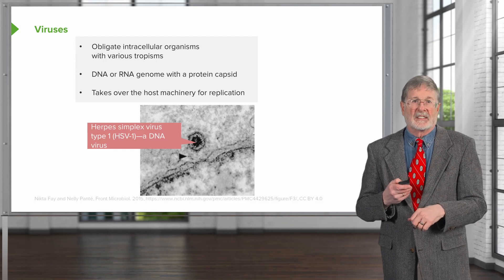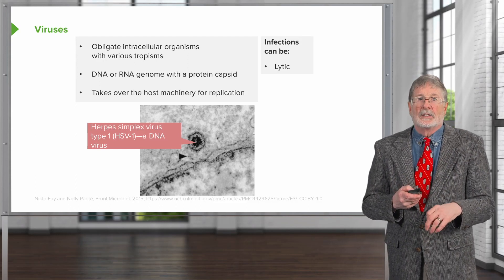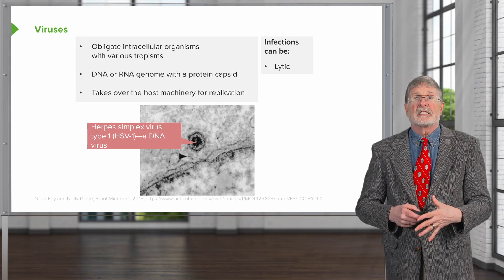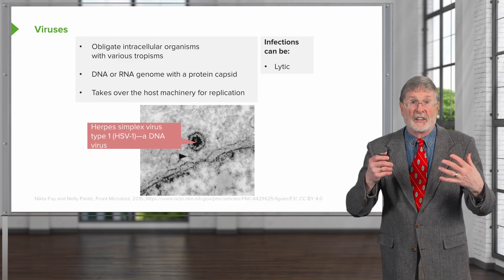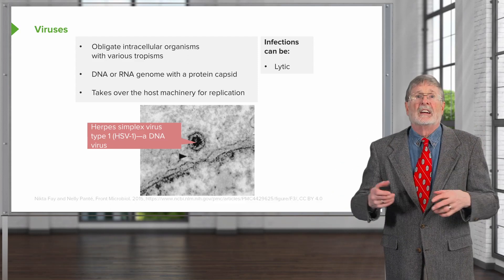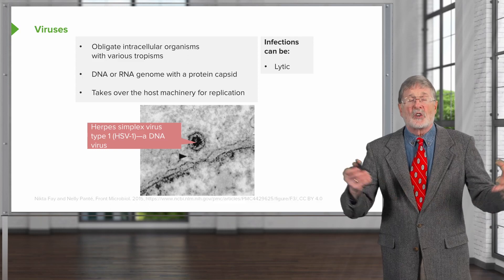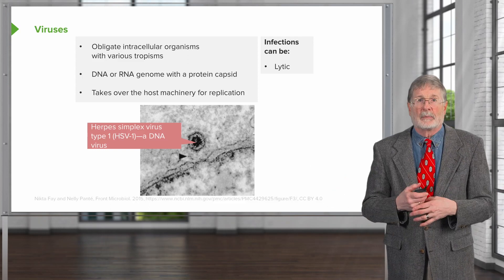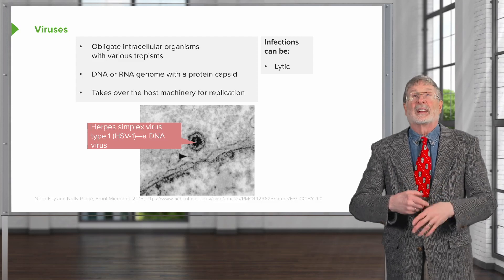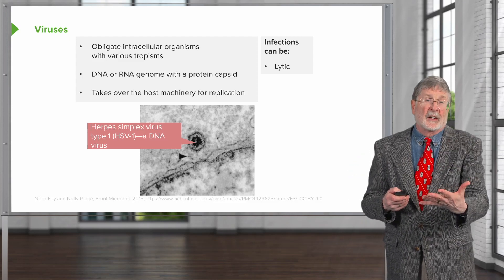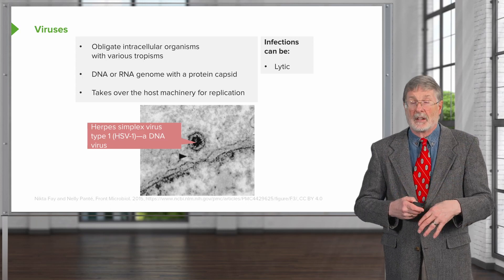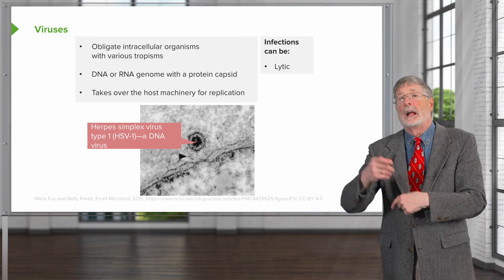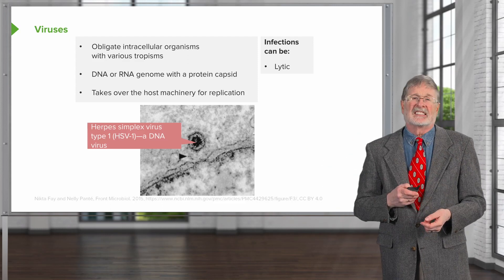Just shown here is herpes simplex virus. The infections that can occur can be lytic — that is to say, as the cell is hosting the reproduction of all this virus, the virus can eventually consume all of the host ATP machinery, consume all of its replicative capacity, and the cell dies and lyses. That's a very convenient way for the virus to be transmitted to the next host: it grows until the cell ruptures, and then there's a whole bunch of virus that spews out, potentially infecting the next cell.